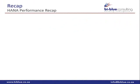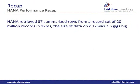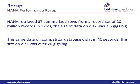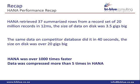To recap on HANA's performance: HANA retrieved 37 summarized rows from a record set of 20 million records in 12 milliseconds. The data on disk was 3.5 GB. We loaded the same data into a competitor's database — a well-known brand, specifically SQL Server 2008 — and it took 40 seconds to retrieve the data, and on disk it was over 20 GB. HANA was over 1,000 times faster and compressed the data by more than five times, saving disk space and cost.